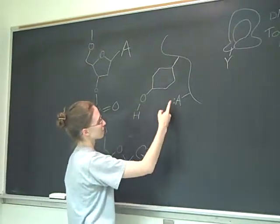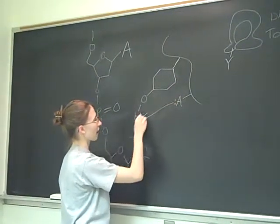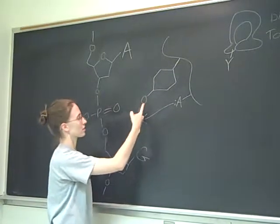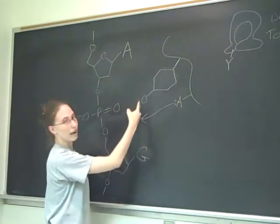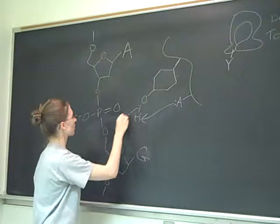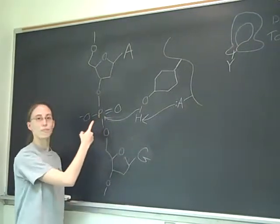So in the mechanism an acid is going to take the hydrogen from this oxygen. The oxygen is then going to have free electrons which it's going to use to attack the phosphate in the backbone.